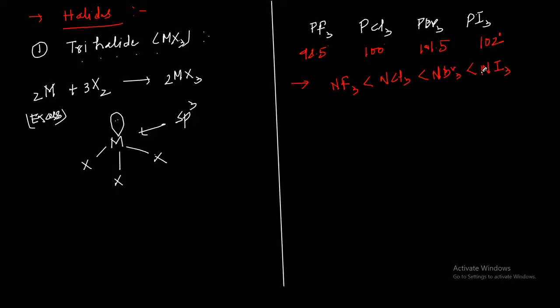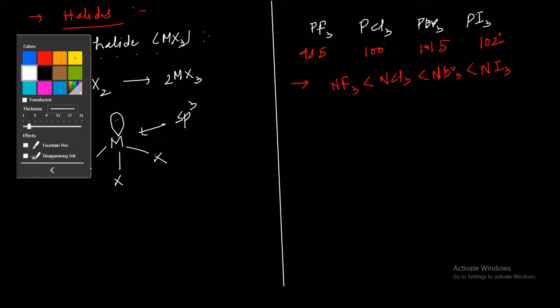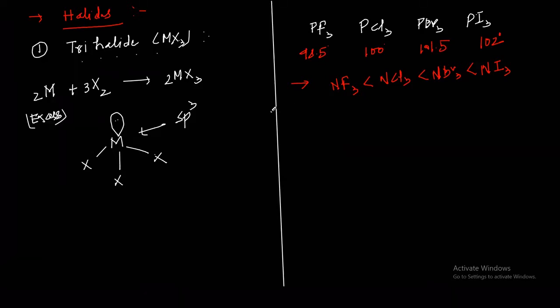The next topic is pentahalides. We already know nitrogen does not form pentahalides. These elements form pentahalides of MX5 type. Nitrogen does not form pentahalides due to absence of d orbital.